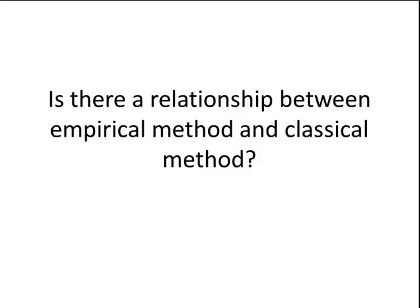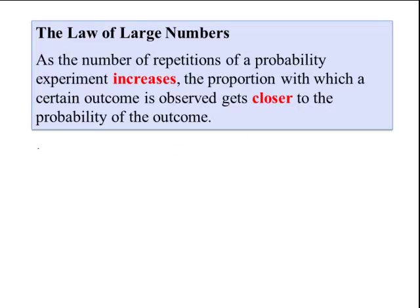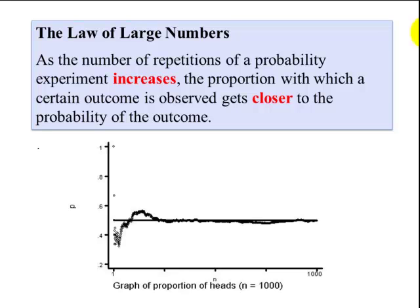Is there a relationship between the empirical method and the classical? The answer is yes. This is known as the law of large numbers. Basically what this says is, as the number of repetitions of a probability experiment increases, the more you do it, the proportion in which a certain outcome is observed gets closer to the probability of that outcome. So as you increase the number of times you do the experiment, that proportion gets closer and closer to the theoretical probability. Here is a graph of flipping a coin. We see a lot of variation here early on. But as we increase the number of times that we flip the coin, the more this experimental probability gets closer to the theoretical probability of 0.5.